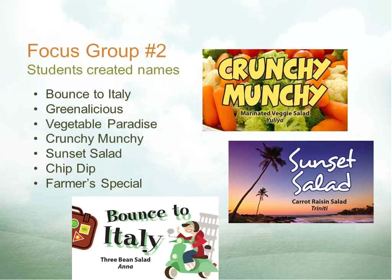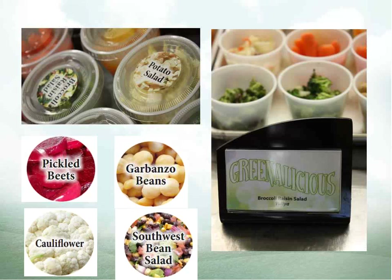We've noticed that cafeteria staff are more on board to trying the interventions if there is a limited timeline and the results can be shared and evaluated as a group. The stickers were designed to help eliminate confusion between two items that look the same, especially for the grab-and-go line when lids are on them — cauliflower and potato salad were often confused, and beets were sometimes confused with cranberries. Cafeteria staff need to see that what they're doing makes a positive impact to stay motivated to take on the extra work.